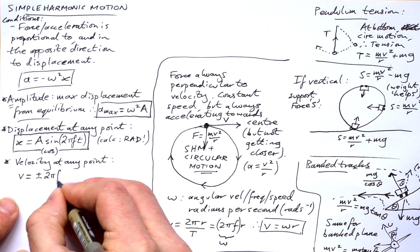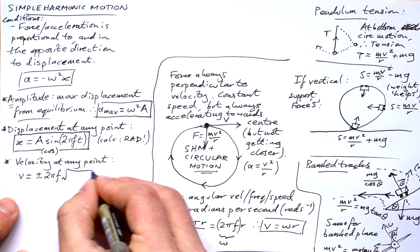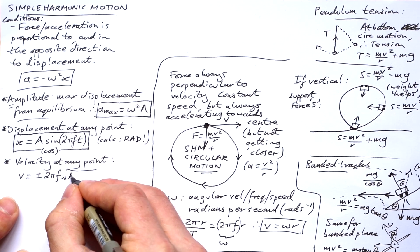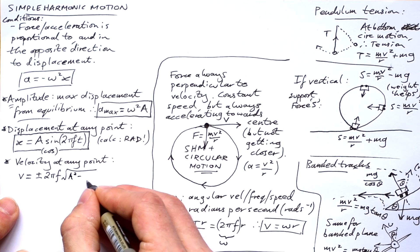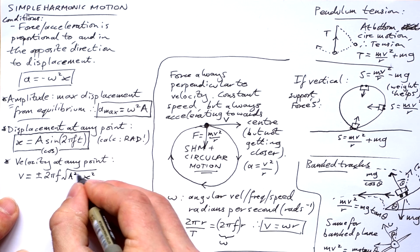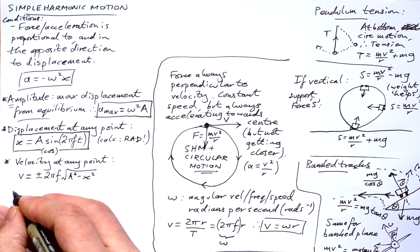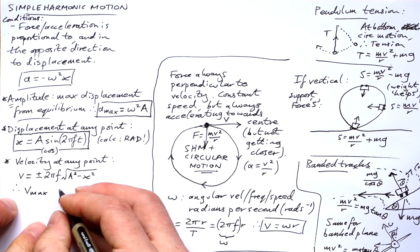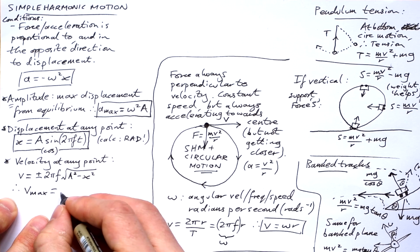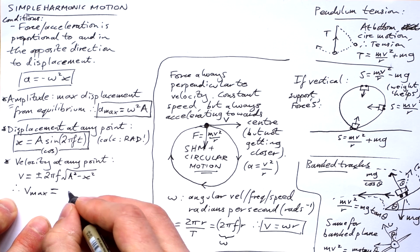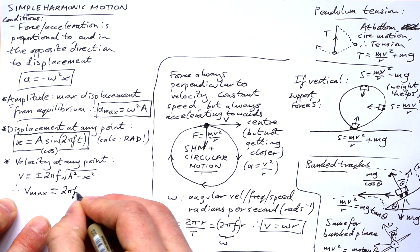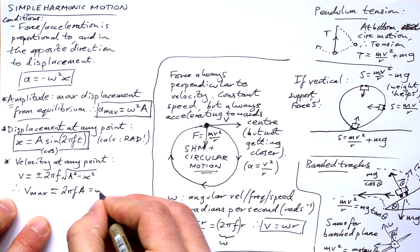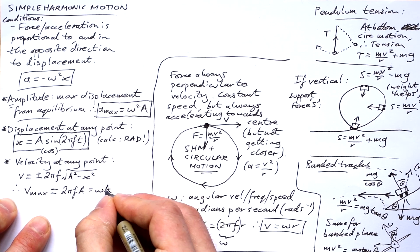Okay, velocity at any point, v equals omega times square root of A squared minus x squared. Yes, plus and minus because it's going to be in both directions, isn't it? This equation very rarely gets used. What does get used is the equation when we're talking about maximum velocity, maximum speed. That's when x is equal to zero, so that means that we just end up with 2 pi f A or omega A. And of course, we get maximum velocity at equilibrium.